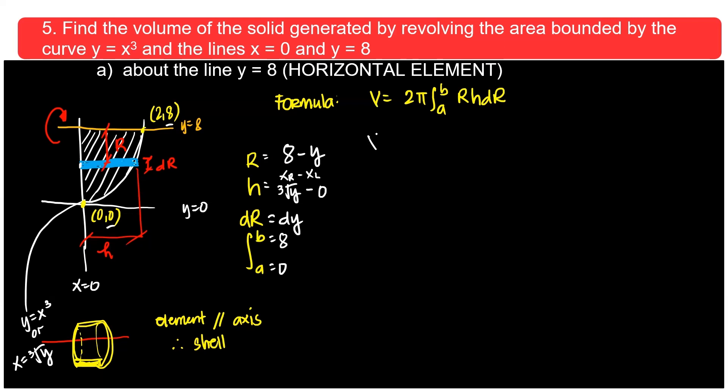Therefore, the volume would then be 2π from 0 to 8 of r, 8 minus y, cube root of y dy. So some of you might say, sir, it's not solvable. It is actually solvable. 2π from 0 to 8. So this is 8 cube root of—sorry, I forgot the root. Cube root of y minus this one is actually y to the 4 thirds dy.